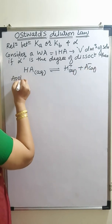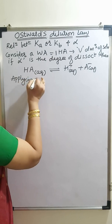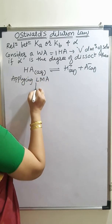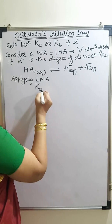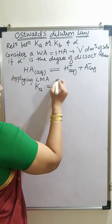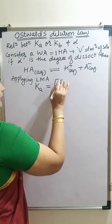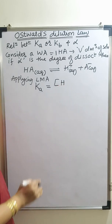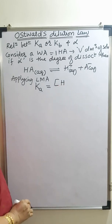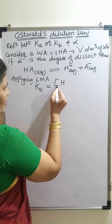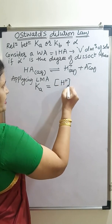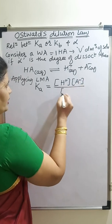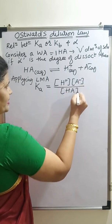Applying the law of mass action, as this is an acid, I will be using Ka equal to the product of active masses of the products divided by the active masses of the reactant. So Ka equals active mass of H⁺ ion times active mass of A⁻ divided by active mass of the acid. I will mark this equation 1.